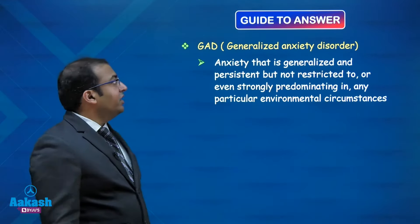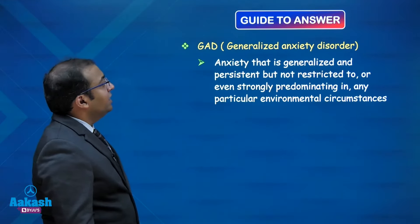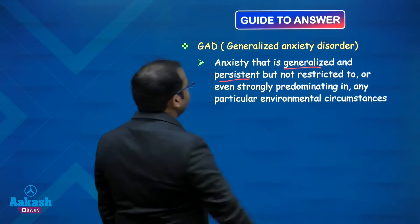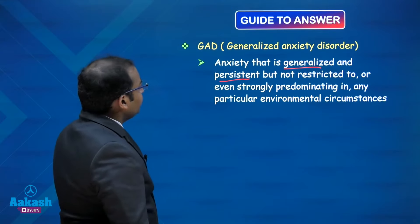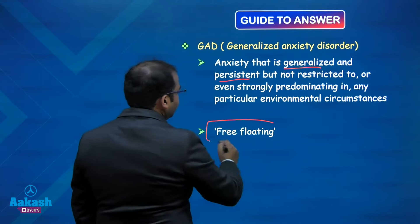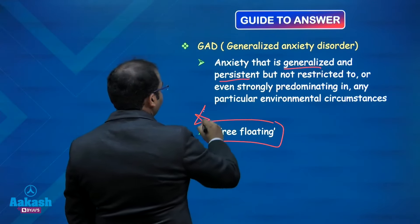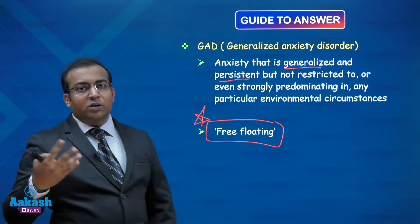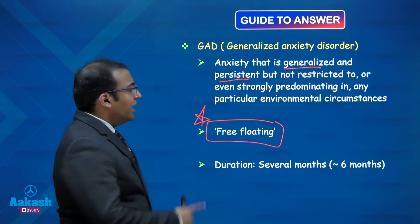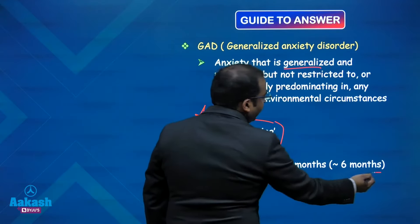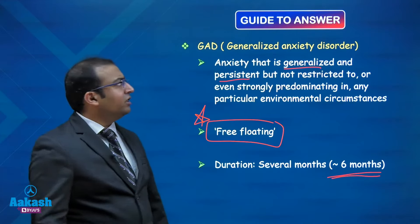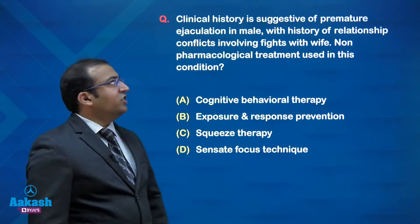In contrast, generalized anxiety disorder features anxiety that is generalized, persistent, and free-floating — not circumscribed or restricted. This is a key differentiating word. Panic disorder happens out of the blue; GAD is a free-floating condition that must be present persistently for a longer duration than one month.